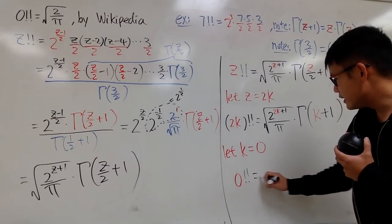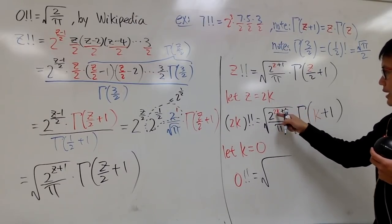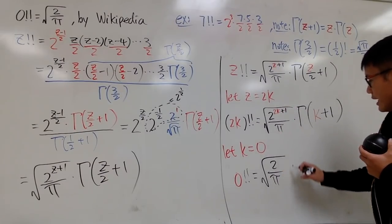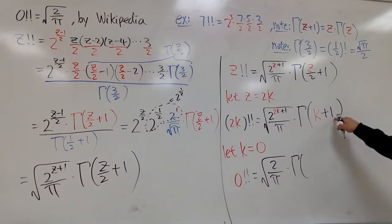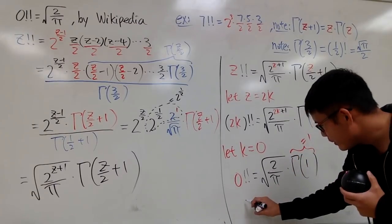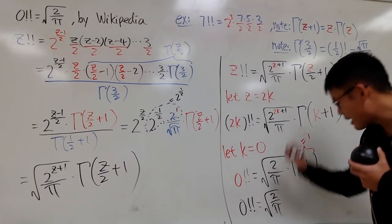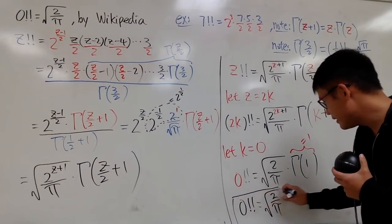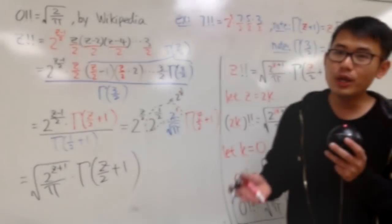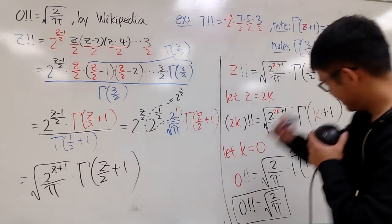Setting k equal to 0, we have 2 to the 0 plus 1 power on top — so just 2 to the first power — divided by pi under the square root, and then gamma of 0 plus 1, which is gamma of 1. Gamma of 1 equals 1. In the end, we are saying that 0 double factorial is equal to the square root of 2 over pi. This is really cool, and it has been documented by Wikipedia, so it must be kind of legit. Hopefully you guys like this video, and if you're new to my channel, please subscribe — I like to make math videos for you guys. And as always, that's it!